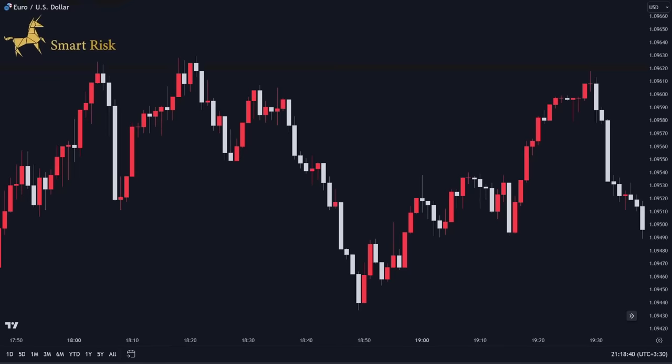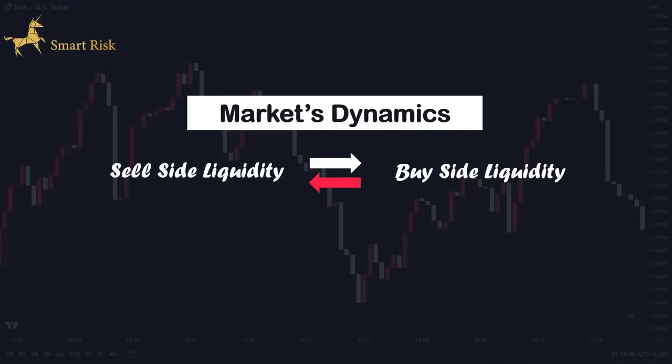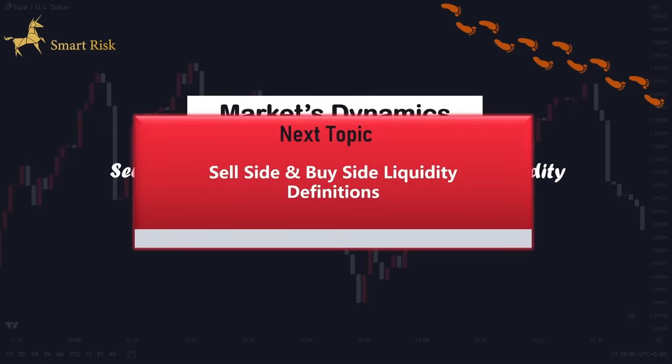Welcome back traders. Let's get started. The sell-side and buy-side liquidity play crucial roles in the market's dynamics. Price is most likely to move toward these zones in the market. The market always moves between sell-side and buy-side liquidity — imagine it like a continuous circle where price moves either from sell-side to buy-side liquidity, or from buy-side to sell-side liquidity. We can use these zones as a roadmap in our chart analysis to get one step ahead of the market and have more clarity on trades.